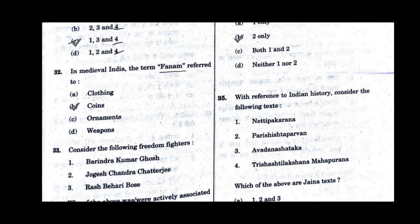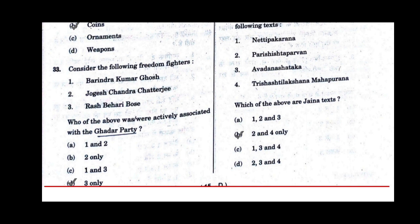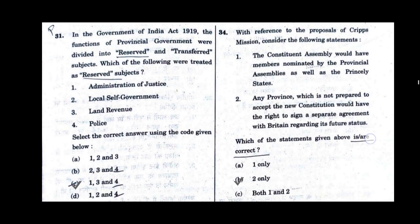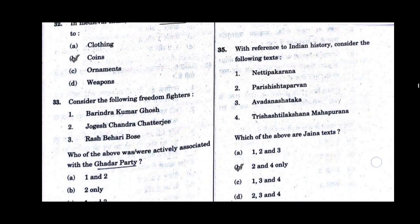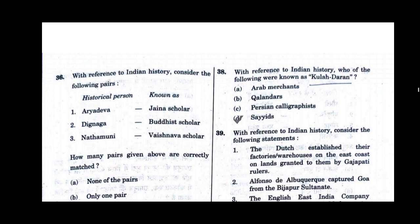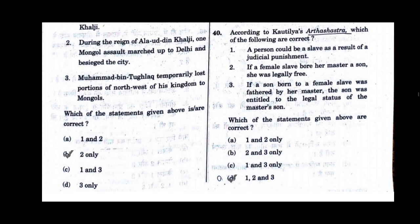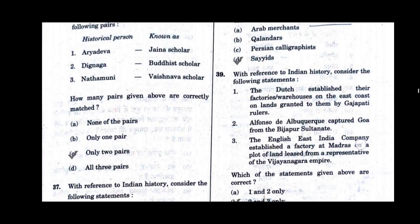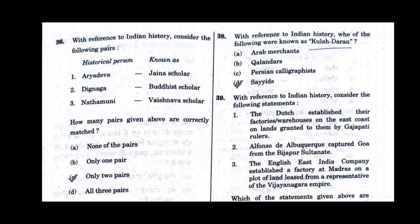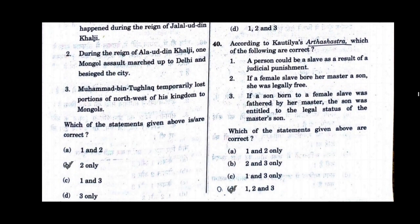Question number 32, option B will be the correct answer. Question number 33, option D will be the correct answer. Question number 34, option B will be the correct answer. Question number 35, option B will be the correct answer. Question number 36, option C will be the correct answer. Question number 37, option B will be the correct answer. The option with the tick mark in brownish color will be the correct answer. Question number 38, option D will be the correct answer. Question number 39, option B will be the correct answer. Question number 40, option D will be the correct answer.